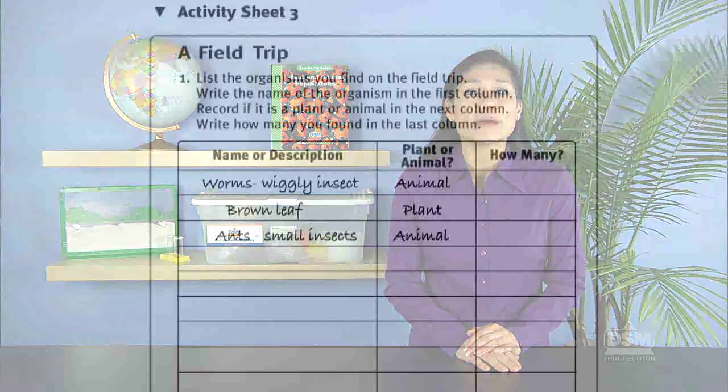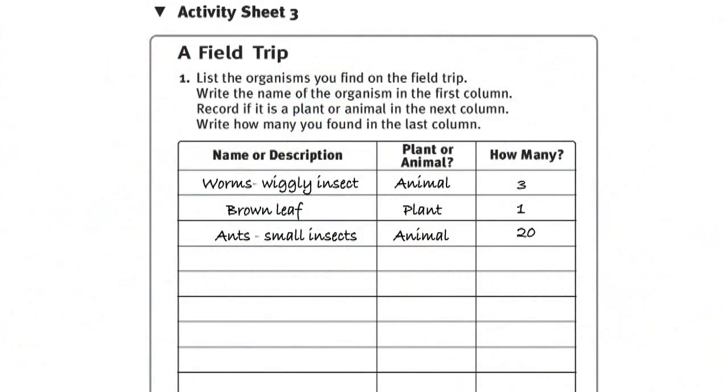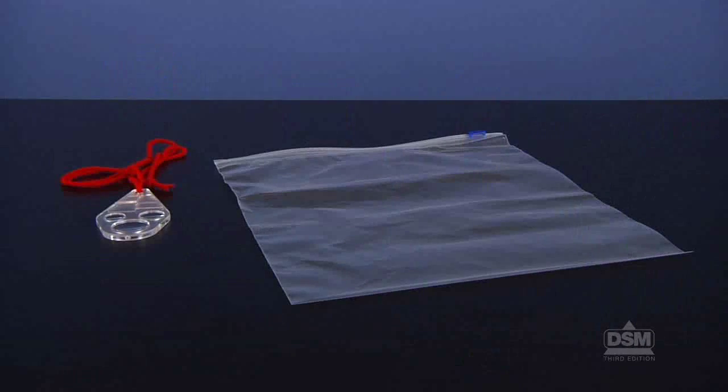Explain to students that if they find fewer than 10 of one kind of plant or animal, they should count them and write the number in the column headed how many. But if there are more than 10, they can make an estimate. Then divide the class into teams of two and distribute the materials.